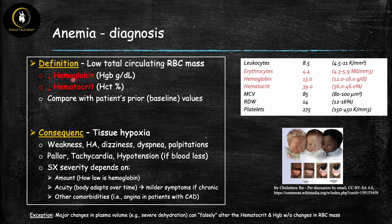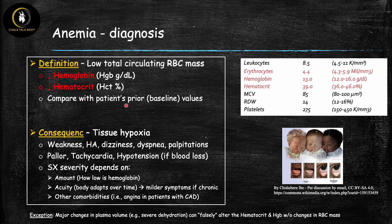A low hemoglobin and low hematocrit determines anemia — they're always going to go together. There's only one scenario where these can give you false values: if the volume of blood is severely changed, such as with severe dehydration or significant volume overload. The reference ranges for males and females differ slightly — males are a little higher due to menstruation in females as well as differences in sex hormones. A clinical pearl: whenever you get lab numbers, compare them with the patient's prior baseline values to assess the acuity of the problem.